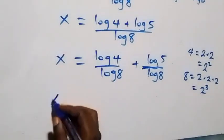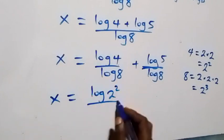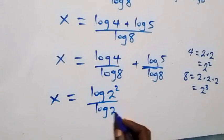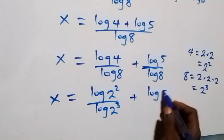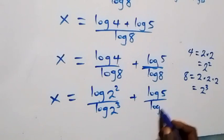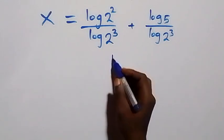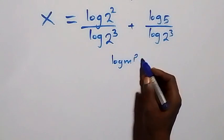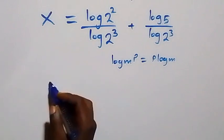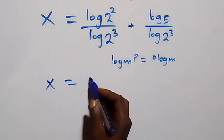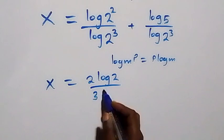What we have here becomes x equals to log 2 squared over log 2 cubed, plus log 5 over log 2 cubed. Then we apply the power rule of logarithm again — log m raised to power p equals p log m — and this becomes x equals to 2 log 2 over 3 log 2.